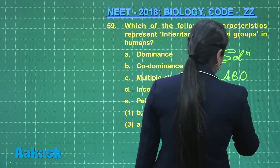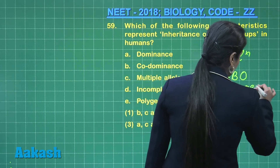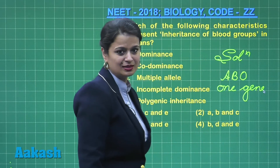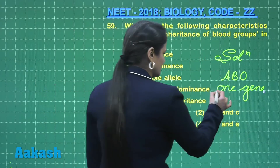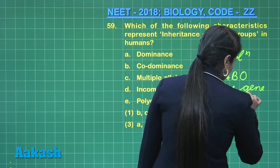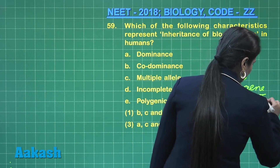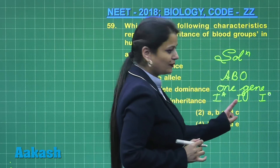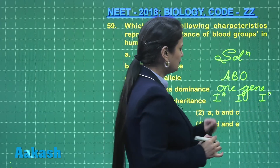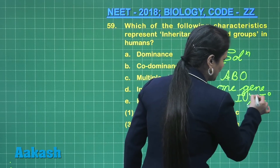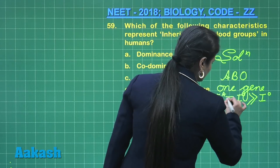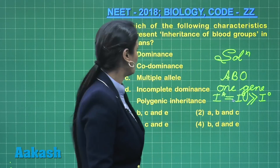So it is single gene inheritance — monogenic inheritance — but this one gene has multiple alleles; three alleles are there: IA, IB, and IO. Now, looking at the relation between these three alleles: IA and IB are dominant over IO, IO is recessive, and IA and IB are co-dominant.